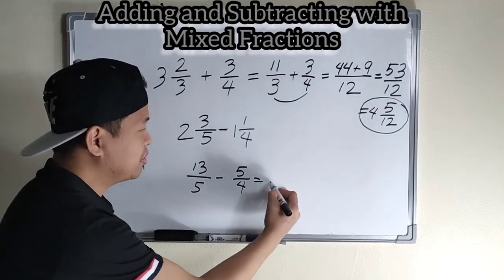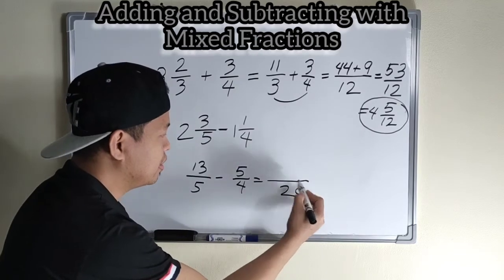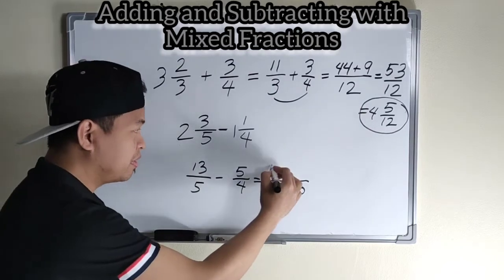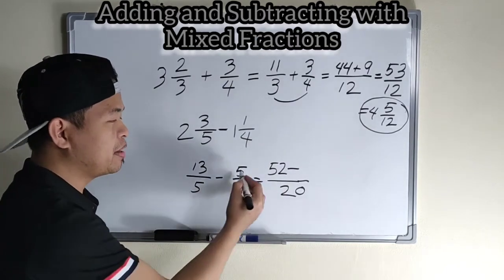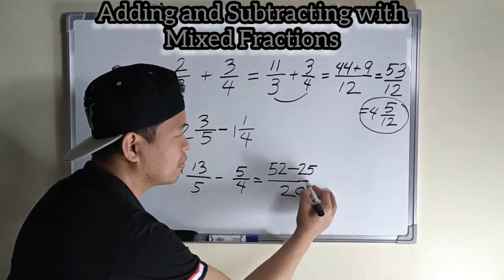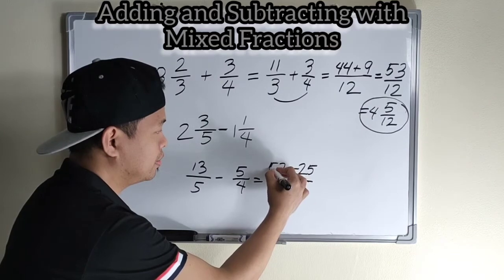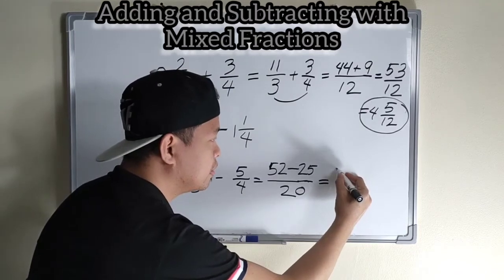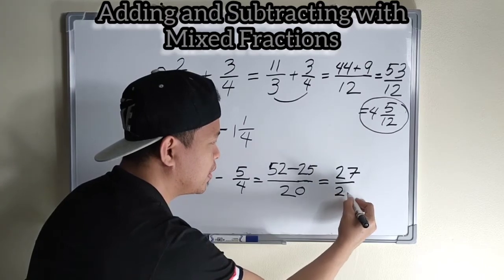Multiply, five times four is twenty. Then, cross multiply, thirteen times four is fifty-two minus five times five is twenty-five. So, fifty-two minus twenty-five is twenty-seven over twenty.